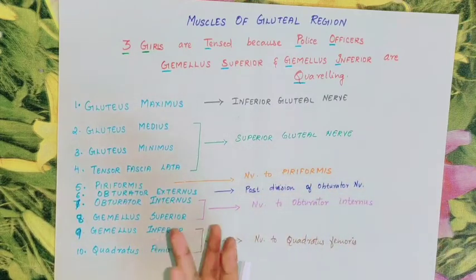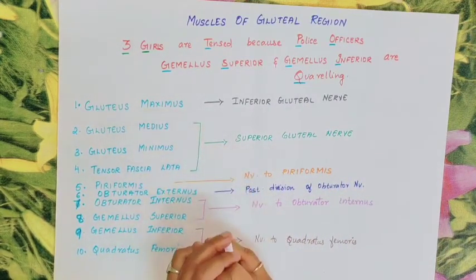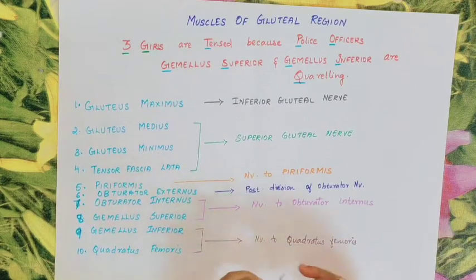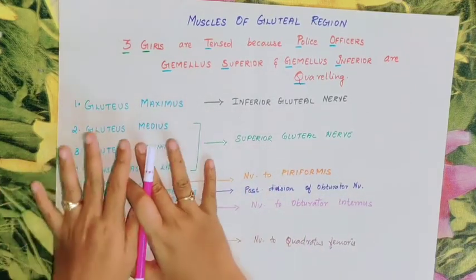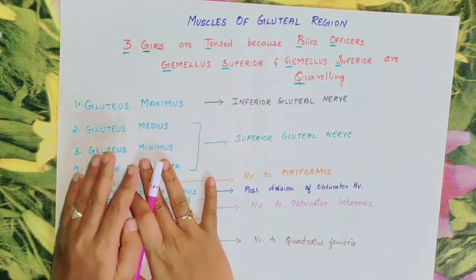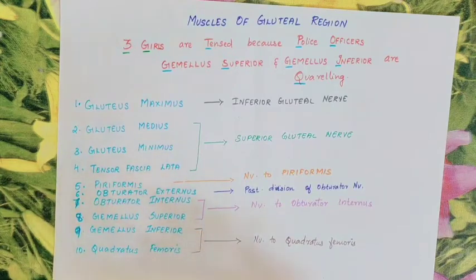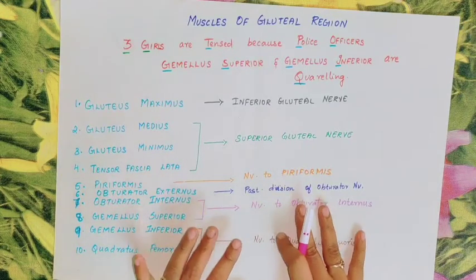We will talk about two groups: the superficial group and the deep group. In this gluteal region, there are ten muscles total, and we will talk about all ten of them.